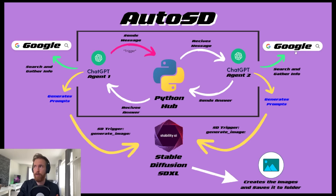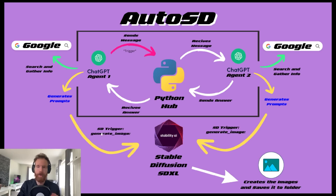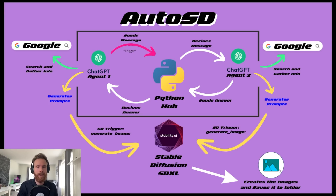Both agents can go to Google, search for the information they need, and bring it back to the conversation so they can tell the other agent about it. When they finally decide on a prompt, they will trigger a generate image function that will send that prompt to Stable Diffusion XL. That will generate the image and save it to our folder. That is the basics of the AutoSD system.